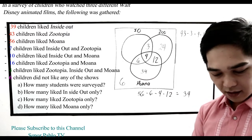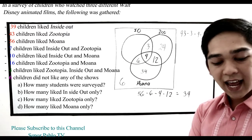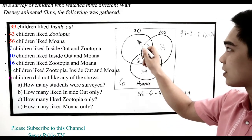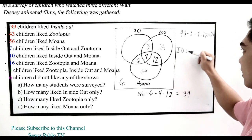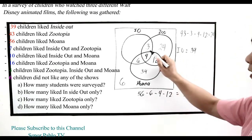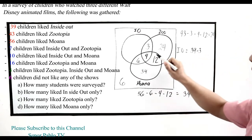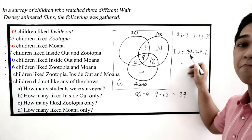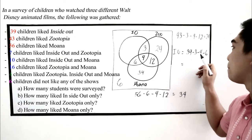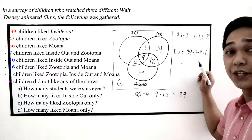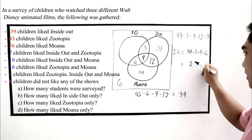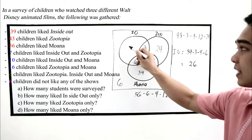Next, 39 like Inside Out. We subtract the intersections: minus 3, minus 4, minus 6. So 39 minus 3 is 36, minus 4 is 32, minus 6 is 26. We place 26 in the Inside Out-only region.